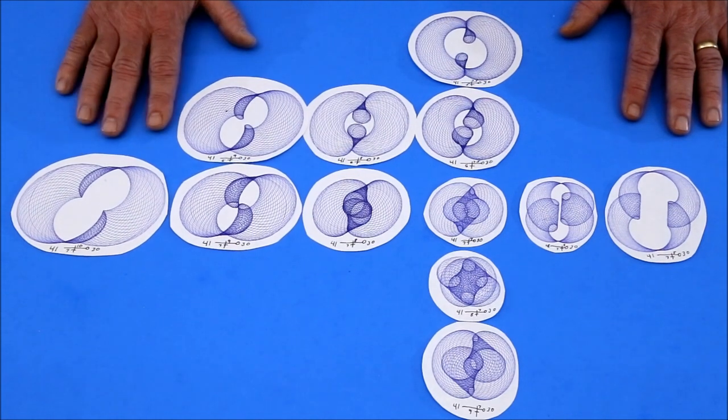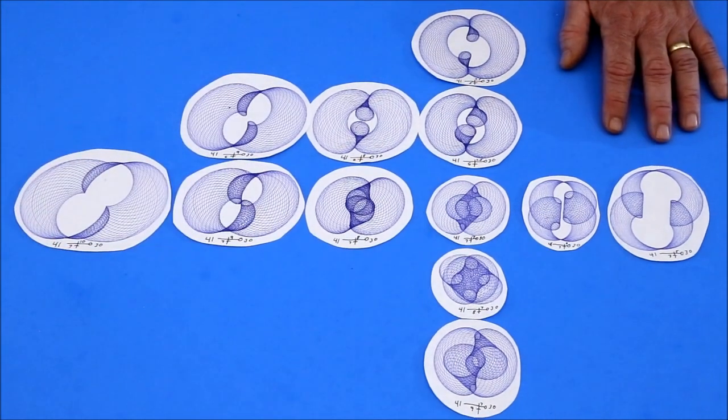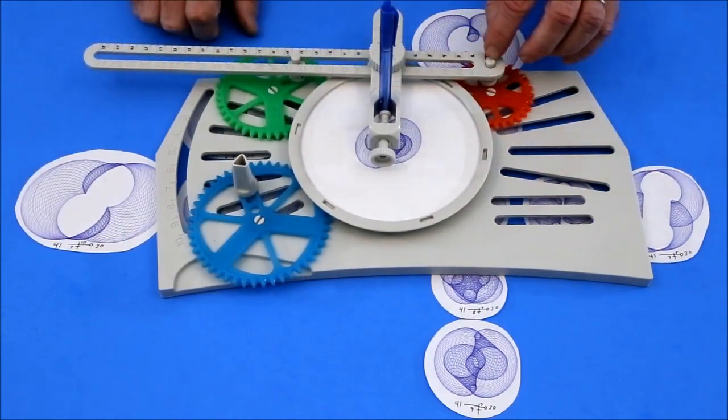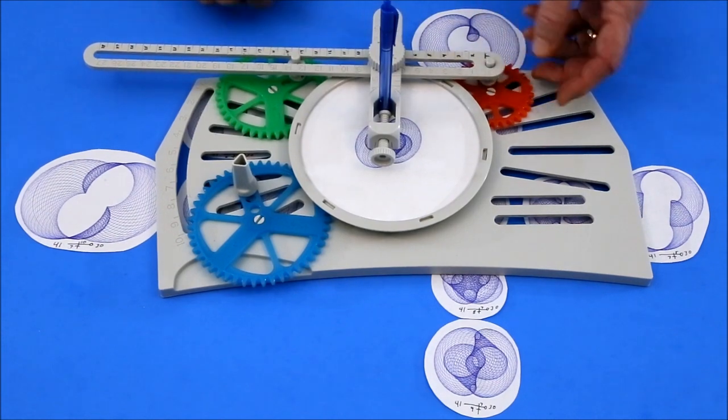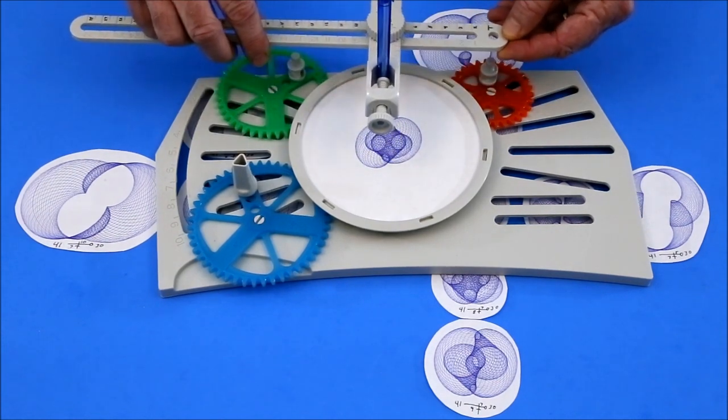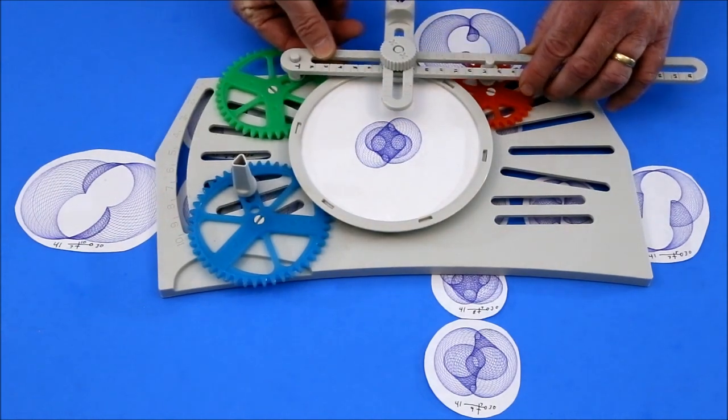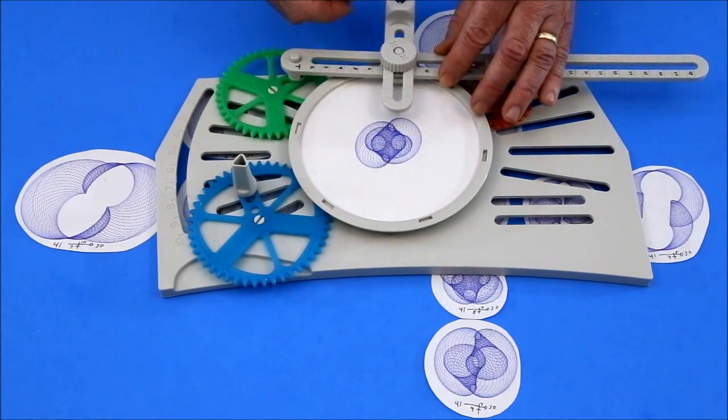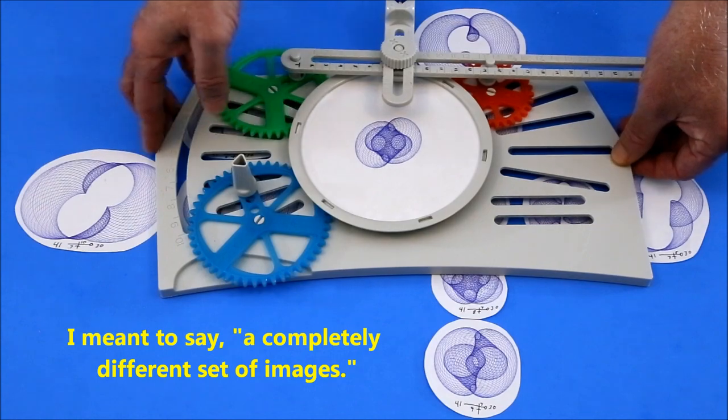And then things get even weirder. Let me show you why. This matrix of drawings was made with the drive pin on the pen armature on the red gear. If all I do is take this off and reverse it like that, no other changes except to turn the pen around so it can hit the paper, you get a completely set of images. Let me show you.